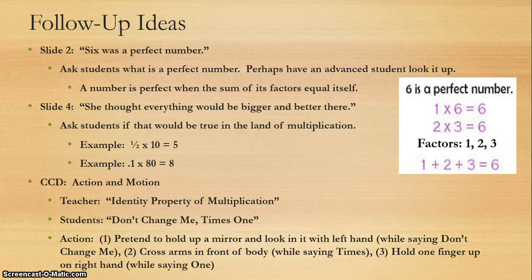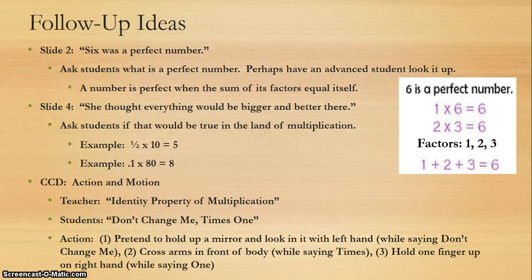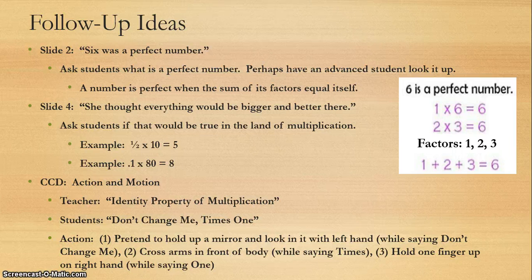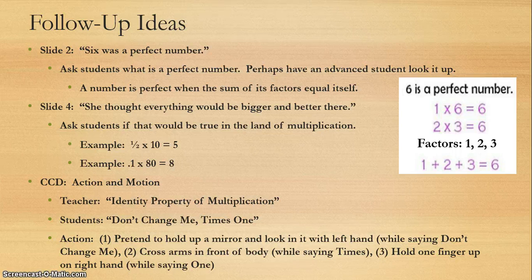For example, the factors of six are one, two, and three. We don't include six itself. When we add one, two, and three, it equals six. That's what makes six a perfect number. You might ask an advanced student to look it up and share with the group.